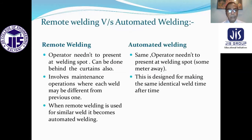Remote welding versus automated welding: in remote welding, the operator need not be present at the welding spot and can work from behind curtains. In automated welding, the operator also need not be present at the welding spot, but it may involve maintenance operations where each weld may differ from the previous one. Automated welding is designed for making identical welds repeatedly. When remote welding is used for similar repetitive welds, it effectively becomes automated welding.